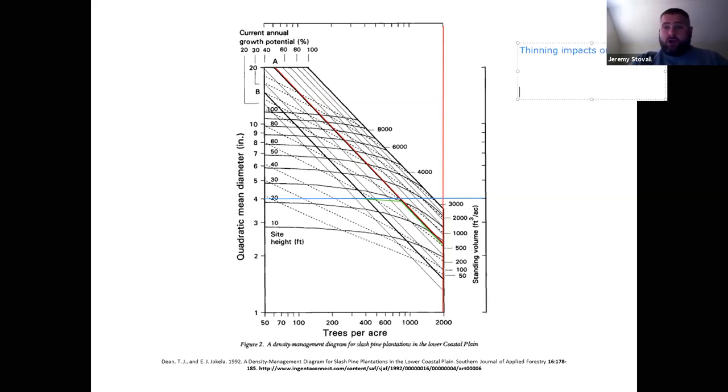Thinning can increase QMD. How do you do that? You cut small trees. So what type of thin cuts small trees? A low thin.